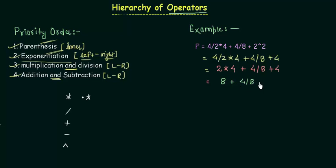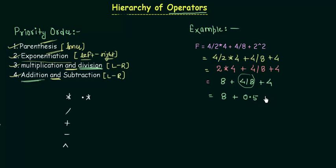We now have 8, plus 4 divided by 8, plus 4. Looking from the left side, there is still a division remaining, and the rest are additions. Since division has higher priority than addition, we do this division first: 4 divided by 8 gives 0.5. So we have 8 plus 0.5 plus 4. Now only addition is left, and we operate the leftmost addition first: 8 plus 0.5 gives 8.5.